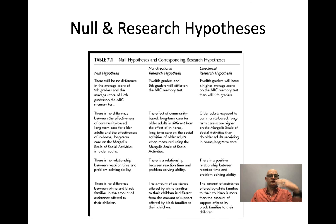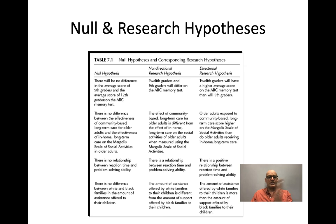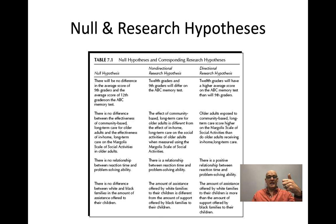There are many ways to construct null and research hypotheses. For example, 'there is no relationship between reaction time and problem solving ability' is a null hypothesis — we assume the groups are the same and test how similar they are. A non-directional research hypothesis would be 'there is a relationship between reaction time and problem solving ability.' A directional hypothesis specifies direction: 'there is a positive relationship between reaction time and problem solving ability,' meaning as reaction time goes up, problem solving ability goes up.